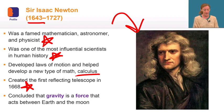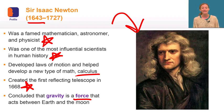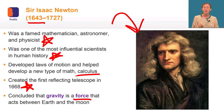Newton decided that a force must be acting between the earth and the moon, one that doesn't require them to be in contact. A force is something that can change the motion, shape, or other features of an existing system or body. Newton hypothesized, or made an informed guess, that the force that pulls the apple to the ground is the same one that pulls the moon towards the earth.